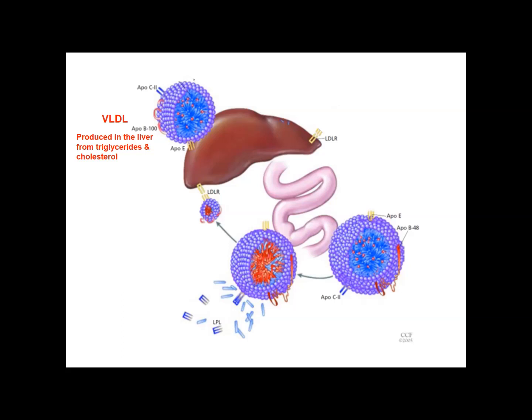Having taken up these chylomicron fragments — essentially emptied-out triglyceride balls with only cholesterol remaining — the liver then does its magic and reassembles some other lipoproteins. The lipoprotein it produces is very low density lipoprotein, VLDL. This is produced from triglycerides and cholesterol in the liver. This lipoprotein is also atherogenic — small enough to get under the endothelial layer in blood vessels and cause problems there.